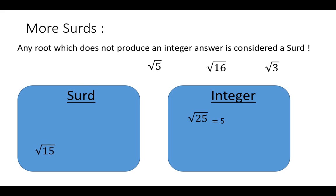Root 15, however, it's a surd because when you try and work it out, it gives you a very long decimal. In fact, it probably goes on forever. Root 5, it's also a surd because when it's worked out, it also gives you a rather long decimal answer.